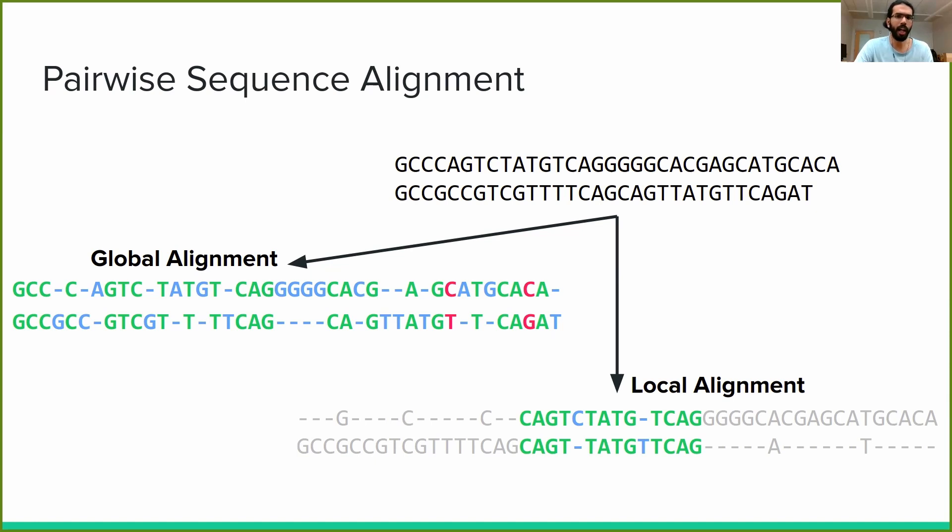We are being pretty hand-wavy here with what we consider lining up nicely, so let us formalize this a bit. Specifically, let us define a scoring function in which we score a given column as plus one if it has a match, minus one if it has a mismatch, and minus one if it has an indel. Further, let us define the score of an entire alignment as the sum of the scores of its columns. In the case of local alignment, let us simply ignore the gray columns entirely.